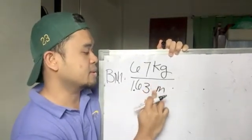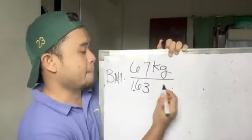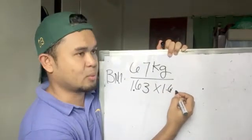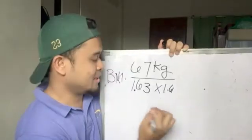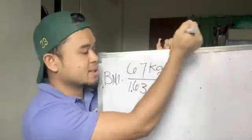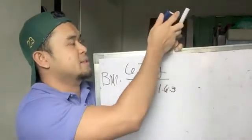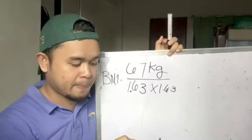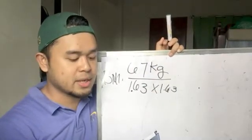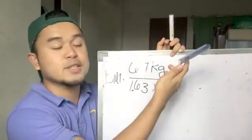Since the formula requires height in meters squared, we multiply 1.63 by itself: 1.63 times 1.63. Using my calculator, that gives us 2.6569, which we can simplify to approximately 2.66.